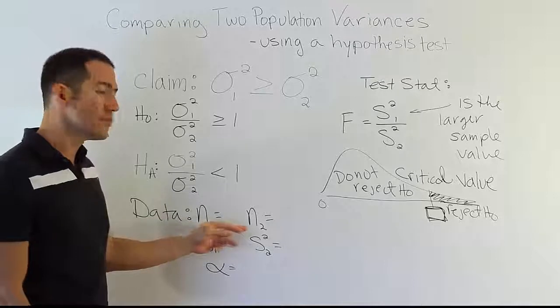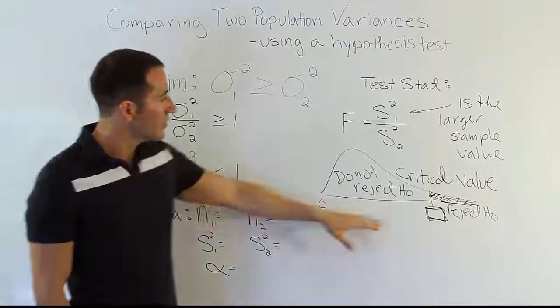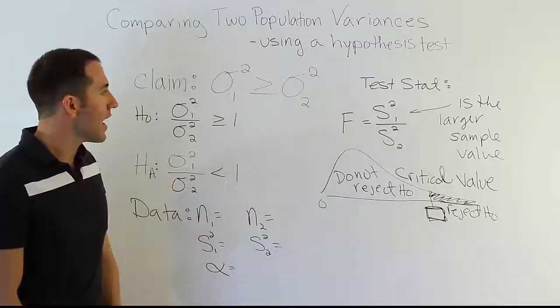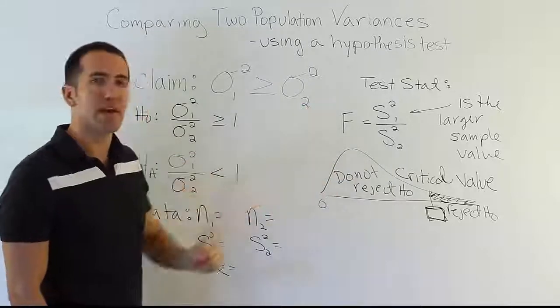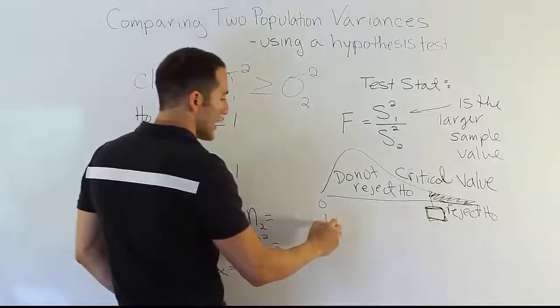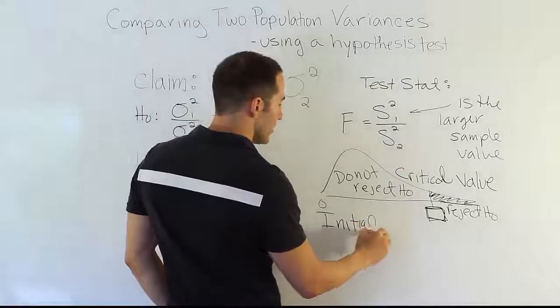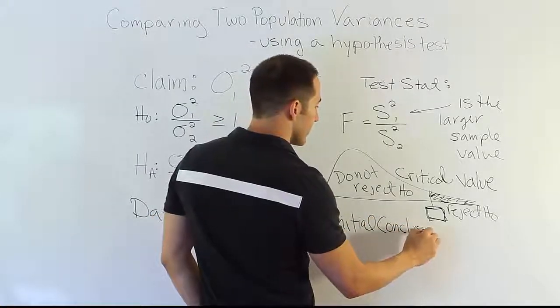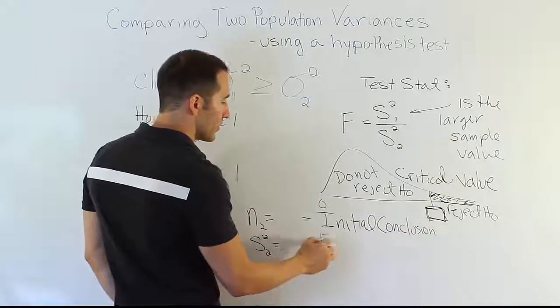It actually has two degrees of freedom, this sample size and this sample size. Then you look that up, you get your critical value, and you know where your rejection region begins. Now once you have that, once you've solved for the critical value, you compare the test stat to the critical value, and you form your initial conclusion. That hasn't changed. It's still the same thing. Do you reject H₀ or not? So you've got the initial conclusion after that.